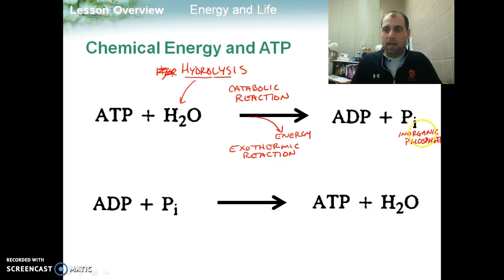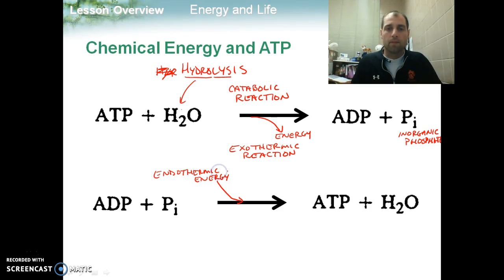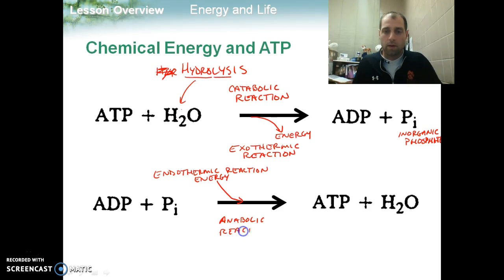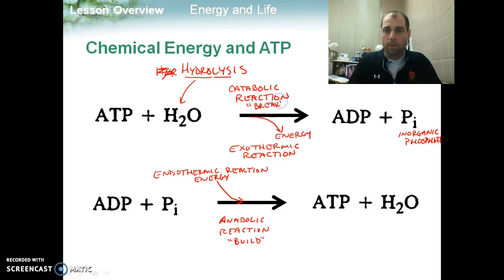Now we can take these two products — ADP and inorganic phosphate — which are kind of waste products, and we can build them up again by adding in energy. Since we're putting energy in, we call this reaction endothermic. Since we're building ATP up from our ADP molecule and our inorganic phosphate molecule, we call this an anabolic reaction — anabolic means to build, catabolic means to break. And since we're adding on an inorganic phosphate group, we call this phosphorylation.